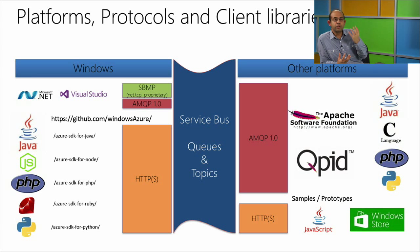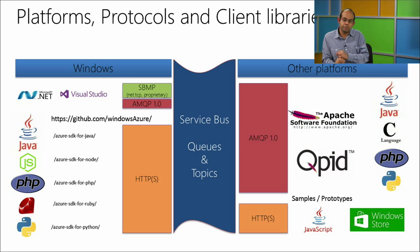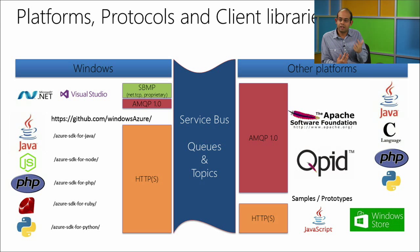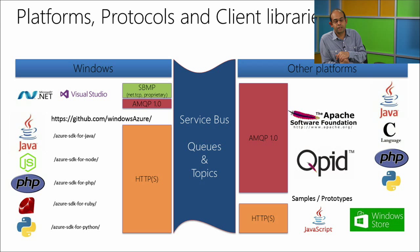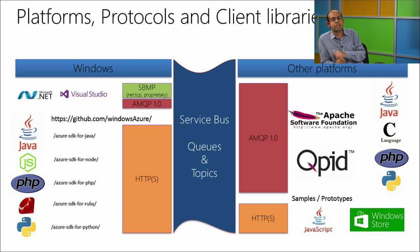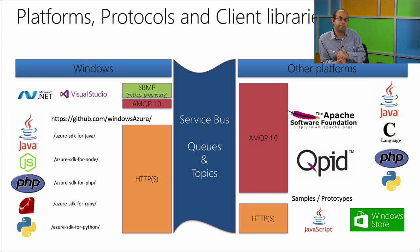For the developer, this means a lot of choice. You can use Service Bus topics and queues as a broker on any platform and language. There are open-source libraries through Apache's Cupid project — Python, C, PHP — that run on Linux or other device platforms. If you're using Windows, Azure has SDKs for Ruby, Node, and others using the HTTPS protocol. Service Bus is truly a multi-protocol broker with rich reach.